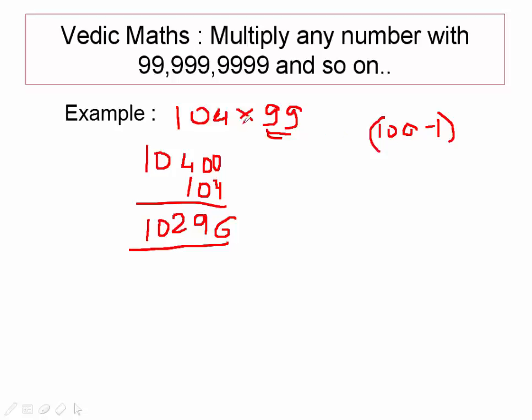Whenever you multiply 104 with 100, you will get 10,400. Whenever you multiply 104 with 1, you will get 104. Similarly, you will get an answer of 10,296.